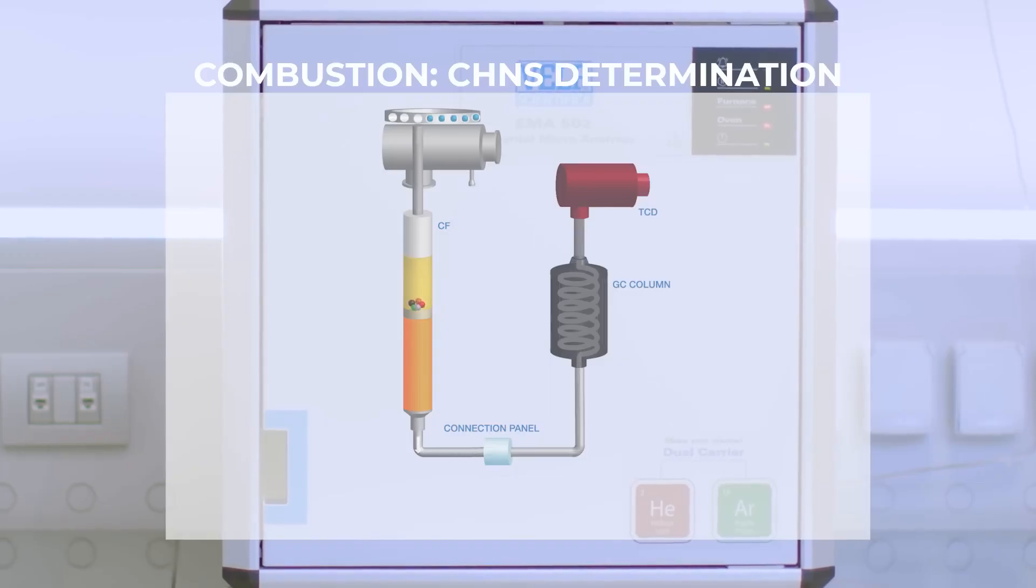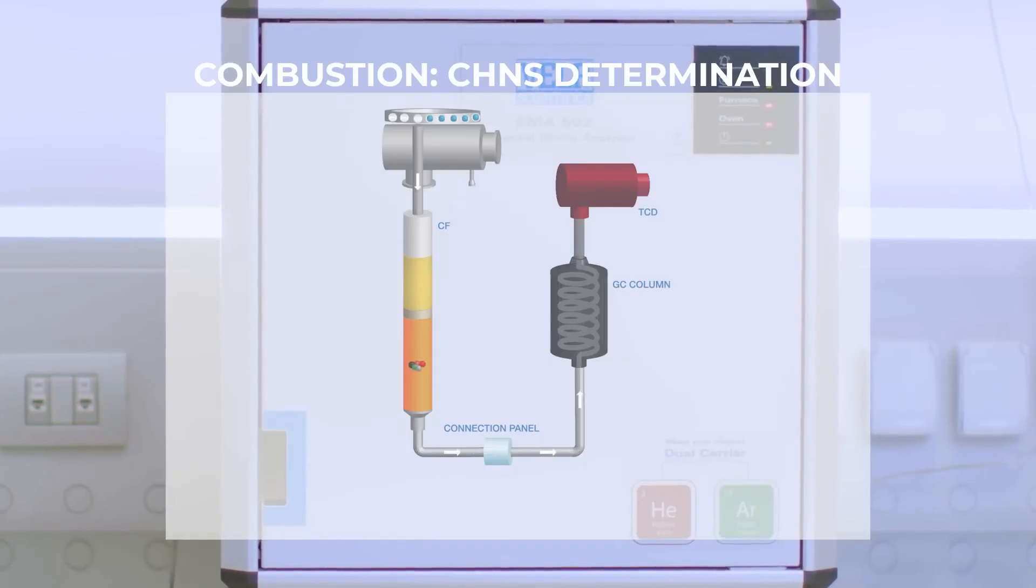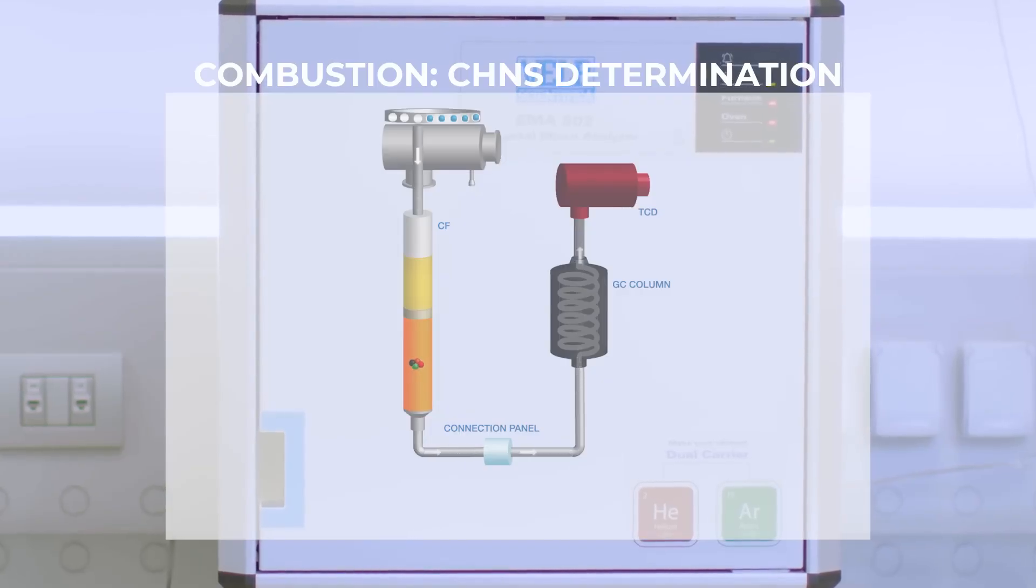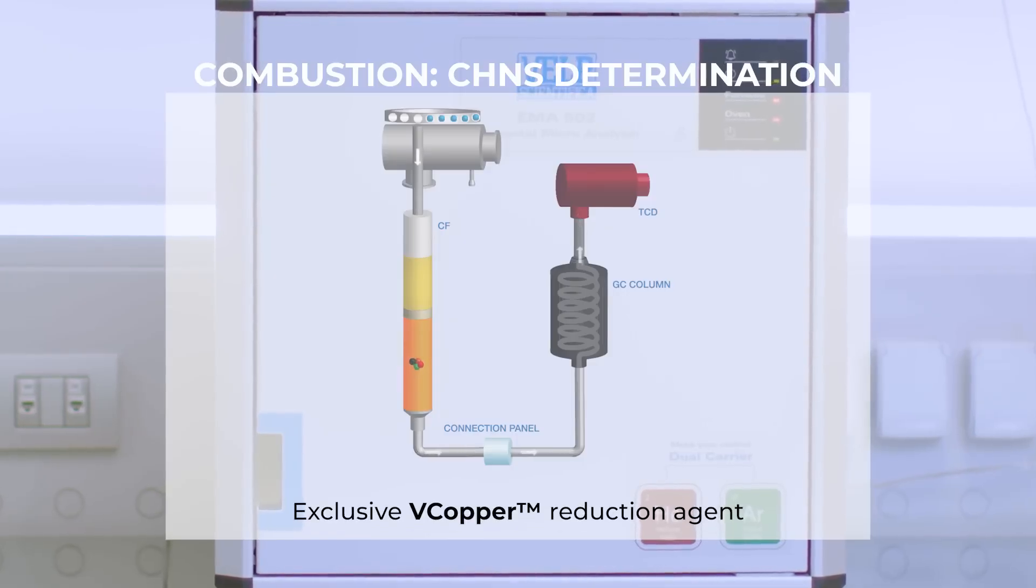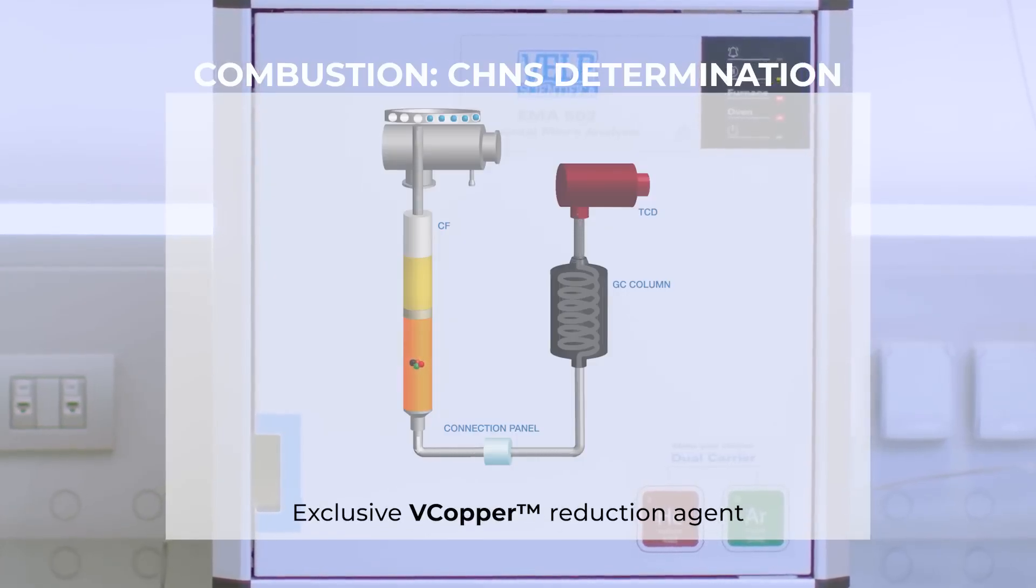During reduction, VELP V-COPPER reduces nitrogen dioxide to molecular nitrogen. VELP V-COPPER is a formulation of highly active copper powder placed in the lower part of the reactor.